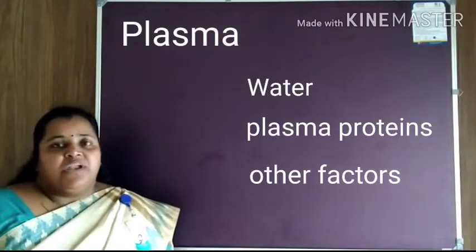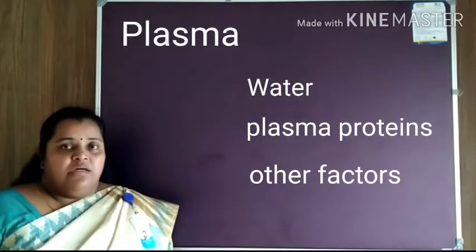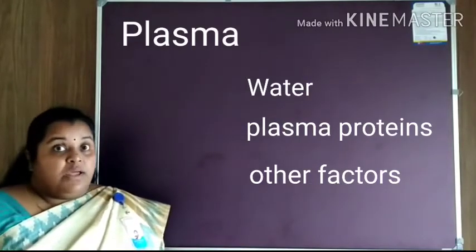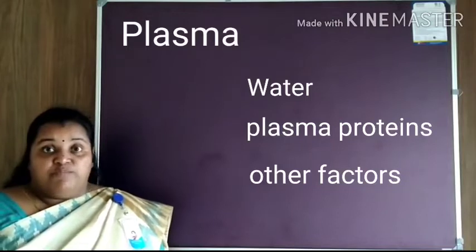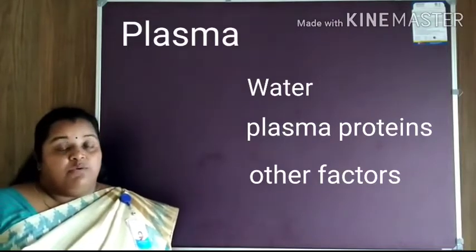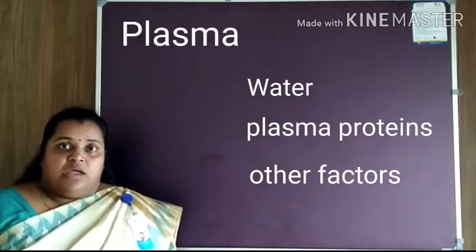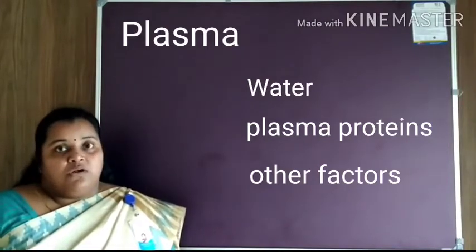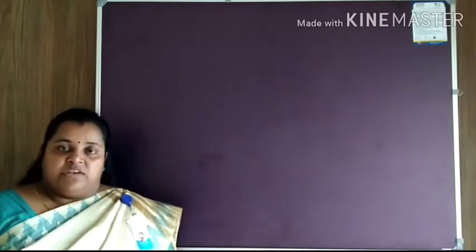The important components of plasma are water, plasma proteins, and other factors. About 90 to 92% of plasma is composed of water, and about 7 to 8% is composed of plasma proteins. Other factors like fat, salt, urea, hormones, sugar, etc., are also present.